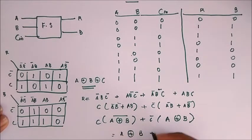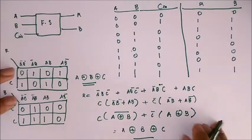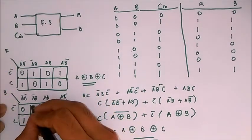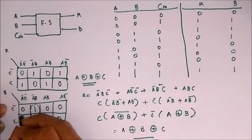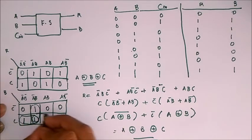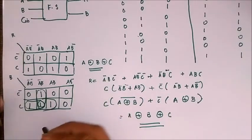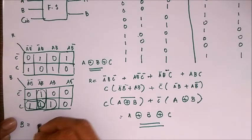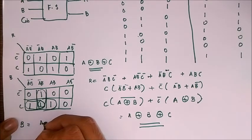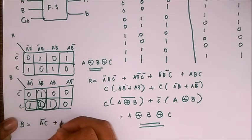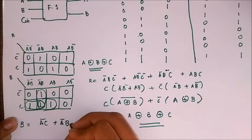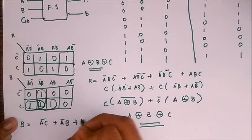And something like this: A bar C plus A bar B plus B C. So now we have got the result and the carry of the full subtractor. Mark it like this.